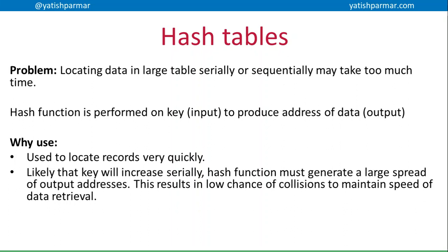When we think about the quality indicators of hash algorithms in the context of hash tables — if we think about primary keys in a database, the key kind of increases sequentially: customer one, customer two, customer three, and so on. The hash function, if it can generate a large spread of output addresses with a low risk of collisions, means we can retrieve data quite quickly because we're not going to have a problem trying to store two records in the same place at the same address. We're linking back to those quality indicators.